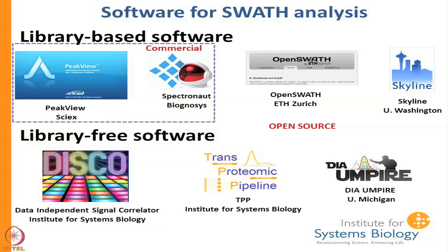This requires that you do DDA runs. Ideally when you want to do a SWATH experiment you would not have to go and run 50 or 100 DDA runs just to make a library to analyze your samples — especially if you are looking at a thousand human samples or many different animals perturbed in different ways. We advocate the use of repository libraries that can be used to do these analyses.